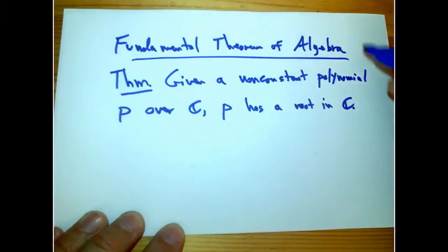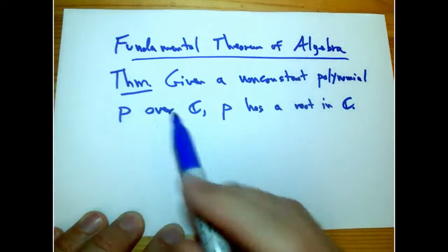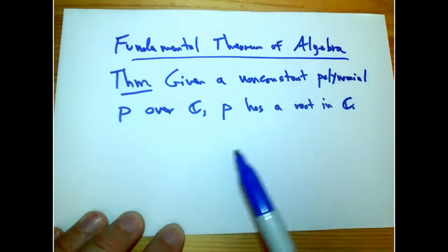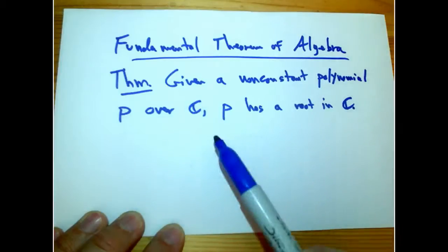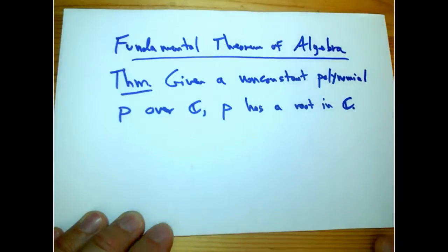So the theorem is that given a non-constant polynomial p over the complex numbers C, where p has coefficients in C, then p has a root in the complex numbers.